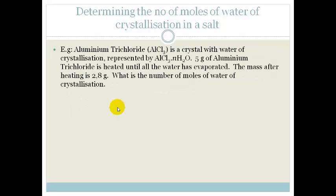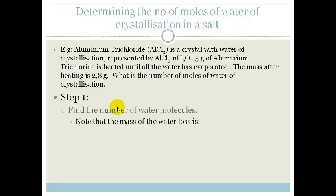So it seems like a scary question, but if we do it step by step, you'll see it's actually really easy. Step 1: We need to find the number of water molecules. But first we need to note the mass of the water loss. We've got 5 grams of Aluminium trichloride initially. Then we heat it up until all the water is evaporated. And now we've got 2.8 grams, which means that 2.2 grams of that was water.